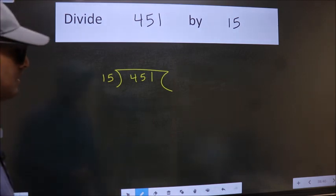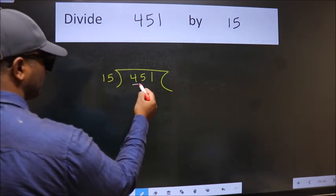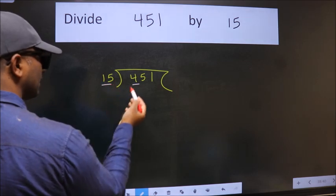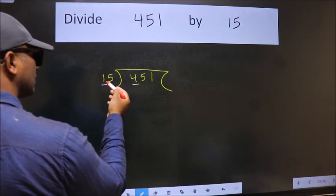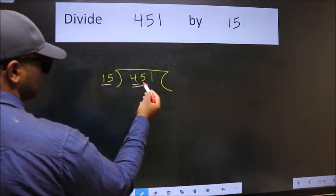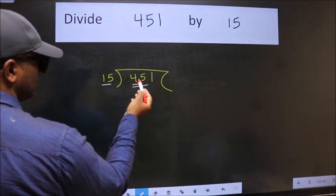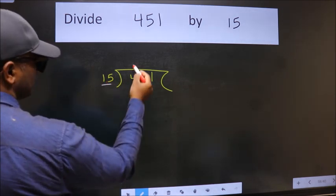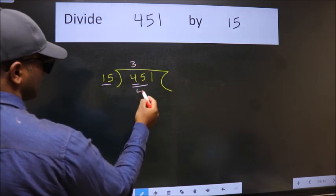Next. Here we have 4, here 15. 4 is smaller than 15, so we should take two numbers, 45. When do we get 45 in 15 table? 15 threes 45.